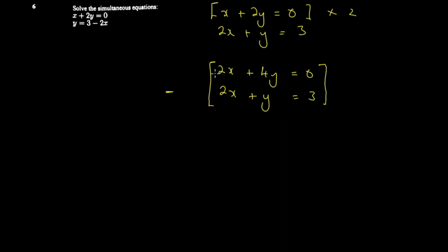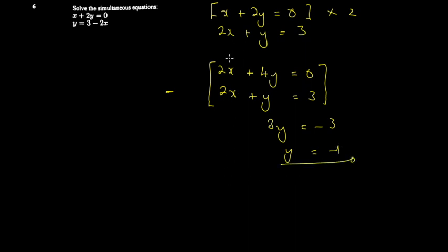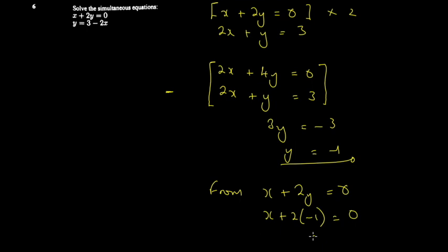A general guideline: if the signs are the same, subtract; if they're different, add. Subtracting gives 0x plus 3y equals negative 3, so y equals negative one. Then substituting back into x plus 2y equals zero: x plus 2 times negative one equals zero, so x equals two.